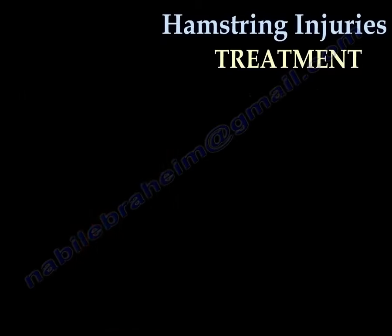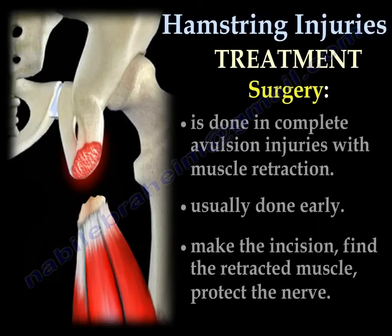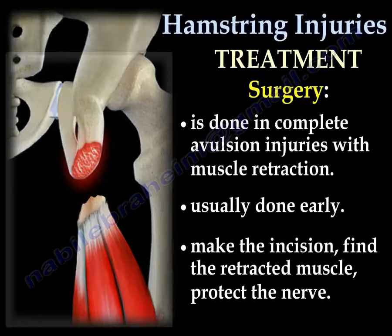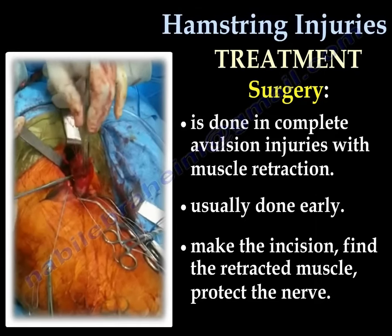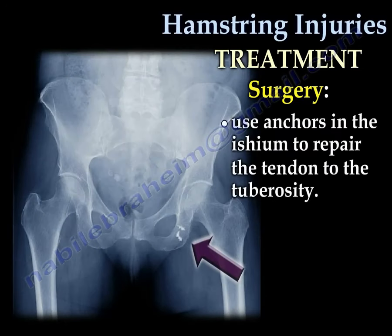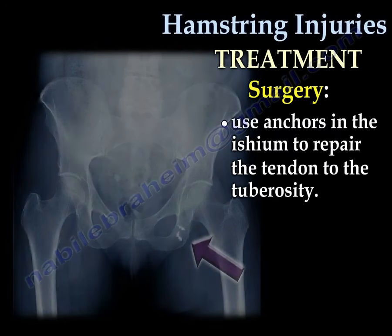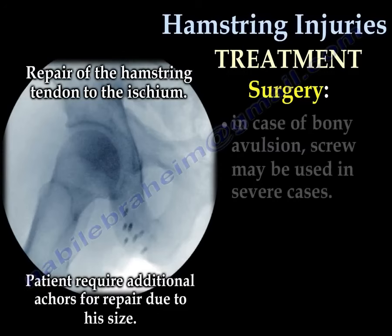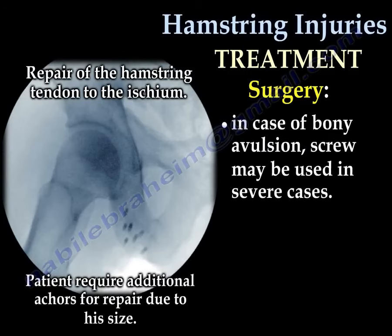In the case of avulsion injury, surgery is performed for complete avulsion injuries with muscle retraction, and it is done early. An incision is made, the retracted muscle and tendon are found and the nerve is protected. Anchors in the ischium are used to repair the tendon to the tuberosity. In the case of a bony avulsion, screws may be used to fix the bony fragment to the ischium.